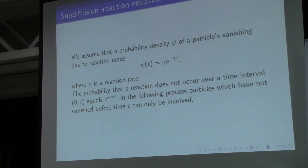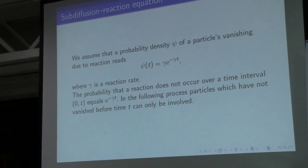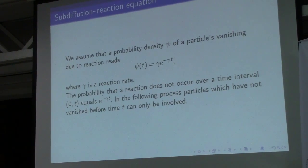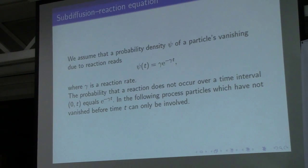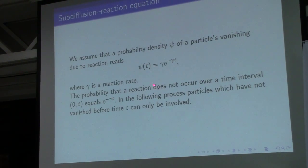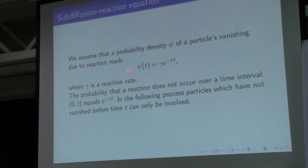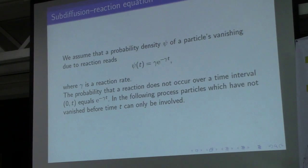How do we include chemical reactions into this model? If a reaction can occur, particles A and B must first meet. After this meeting, we assume that the probability density of the time until the reaction occurs follows an exponential distribution.